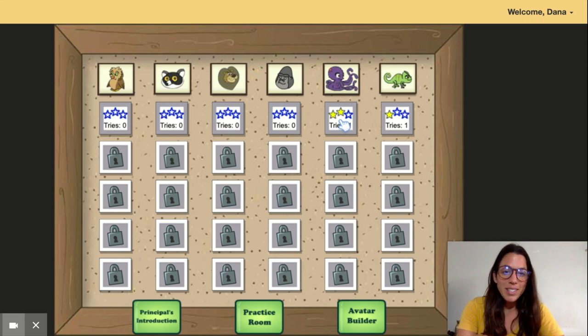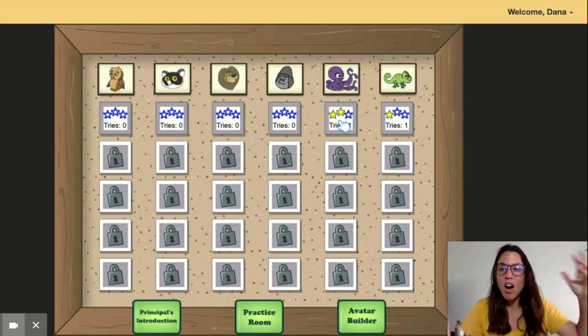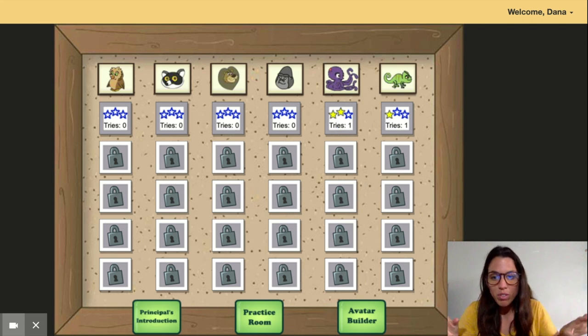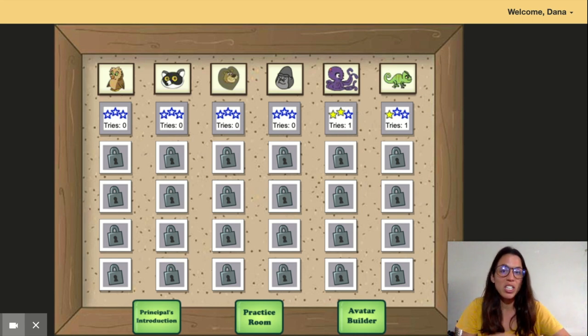Basically how it works is you'll complete a scene and then at the end you'll have a conversation with the principal of Zoo University and he'll let you know how you did and he'll give you feedback. You can earn one, two, or three stars depending on the responses you made in that particular scene.